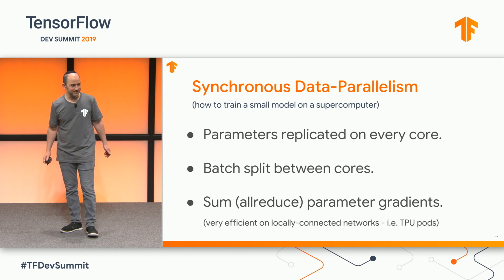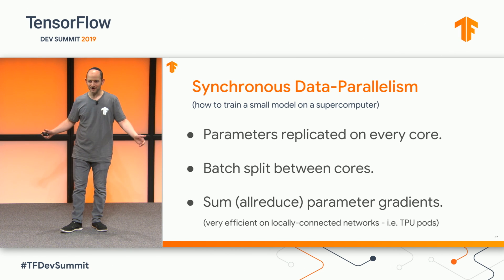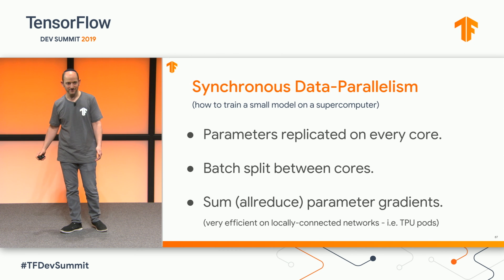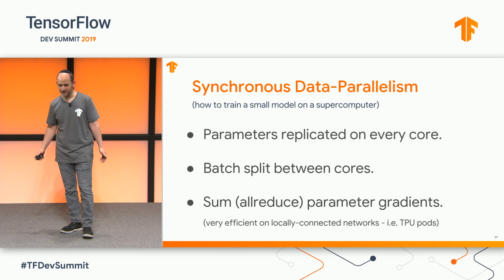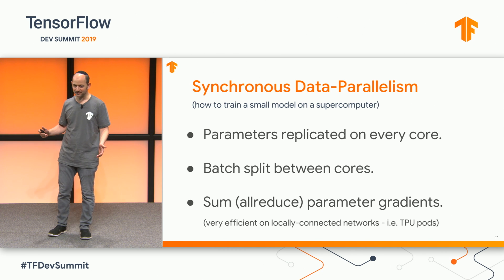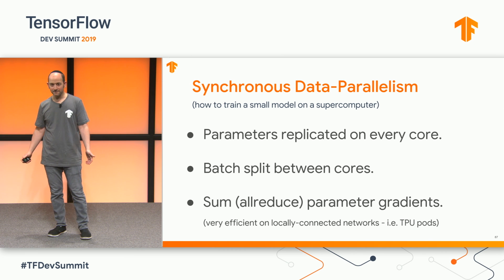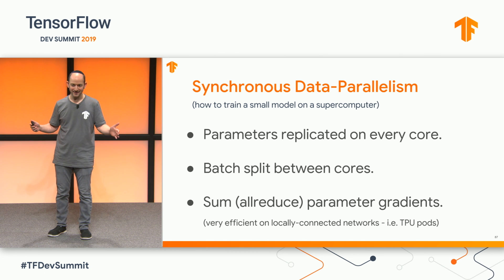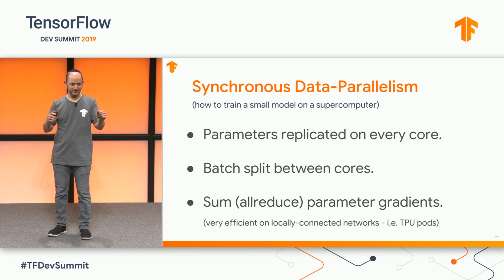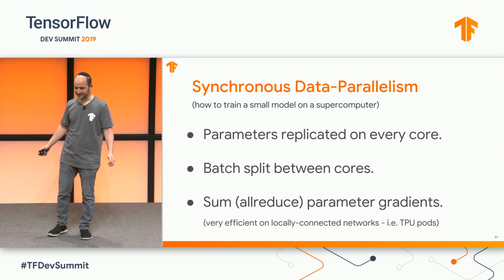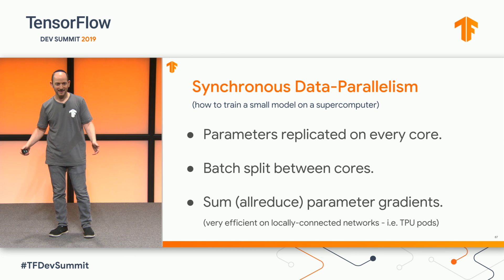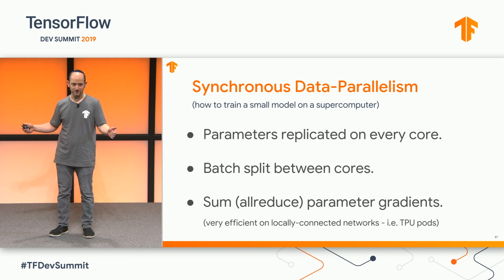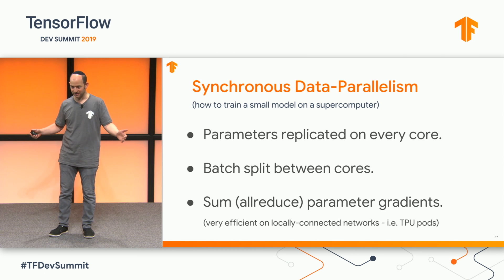So first, data parallelism. This is how roughly everybody trains neural networks if you have distributed hardware. This is what we use on TPU pods at Google. Generally, you put your entire model on every device, split up a training batch into a lot of little chunks, one on each device, run it, then add up all the gradients on the parameters across all the devices and do your update.